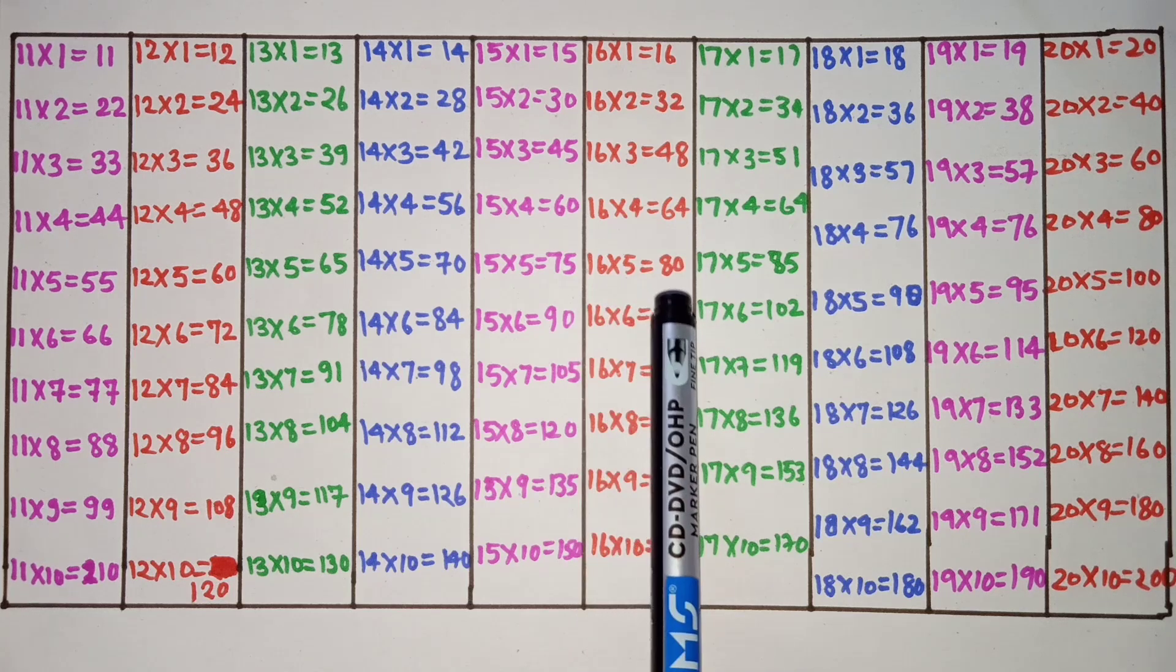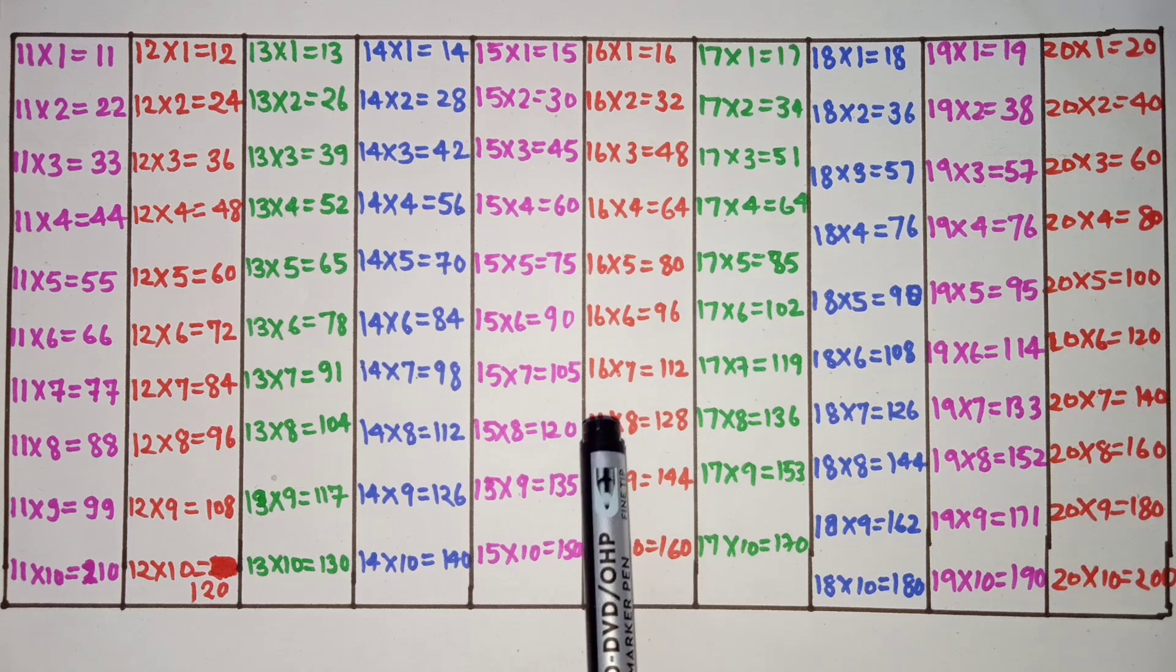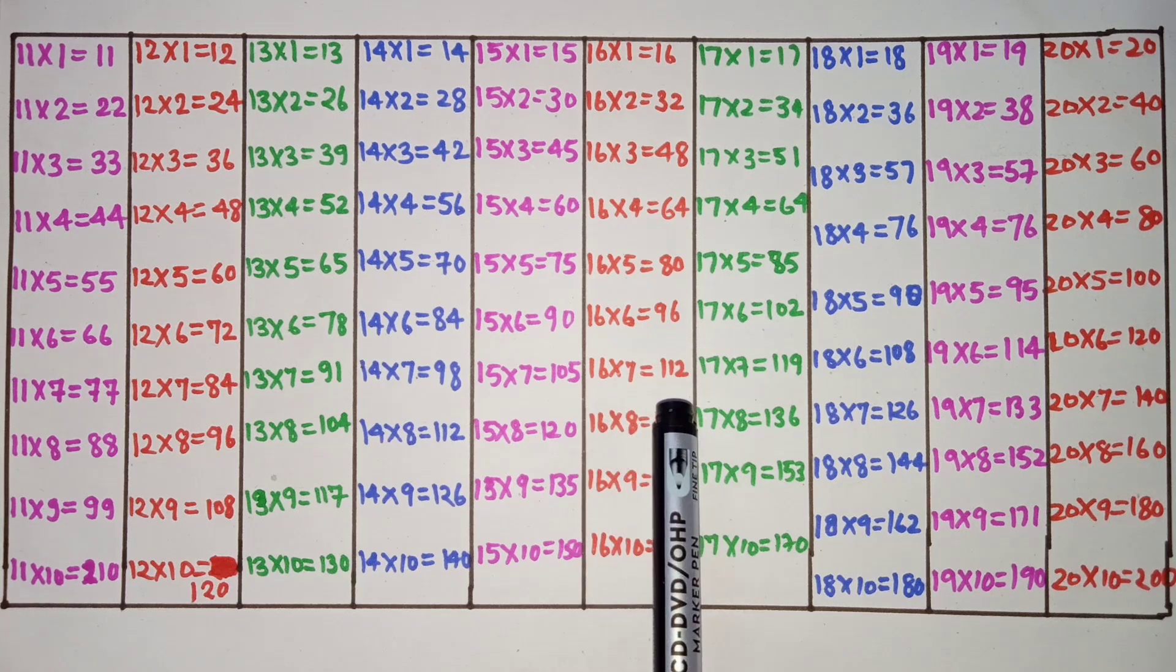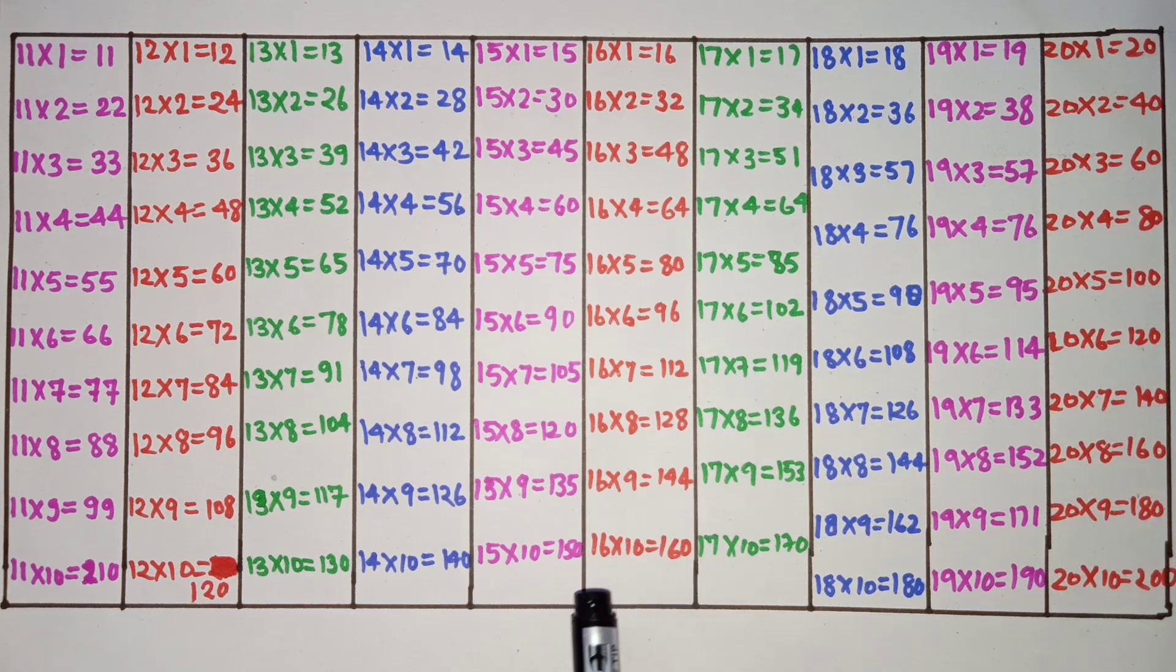16 fives are 80, 16 sixes are 96, 16 sevens are 112, 16 eights are 128, 16 nines are 144, 16 tens are 160.